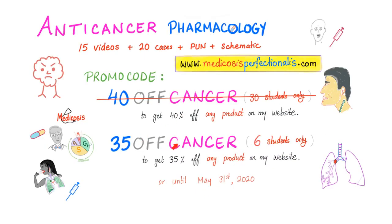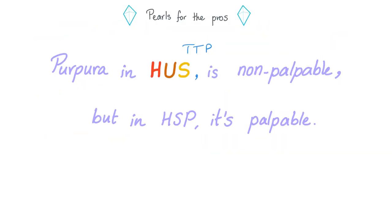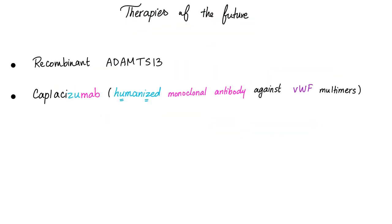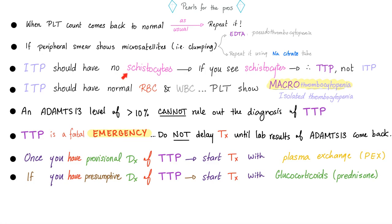Purpura in HUS is non-palpable. Purpura in TTP is also non-palpable. But purpura in HSP — Henoch-Schönlein purpura — is palpable. Therapies for the future: recombinant ADAMTS13 — since we have a defect in ADAMTS13, we can give the patient ADAMTS13. Also, caplacizumab — a humanized monoclonal antibody against von Willebrand factor multimers to break them down into monomers. ITP has no schistocytes, but TTP does have schistocytes.